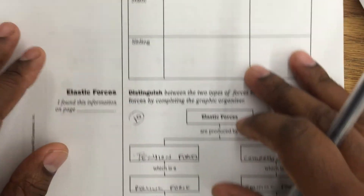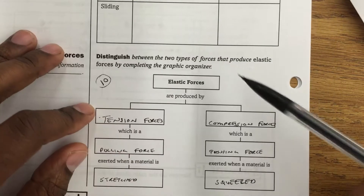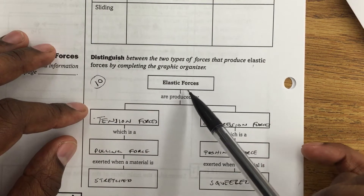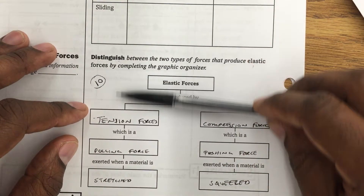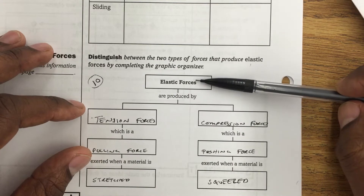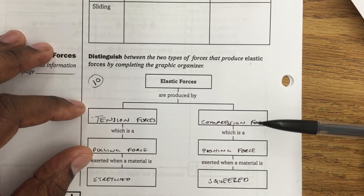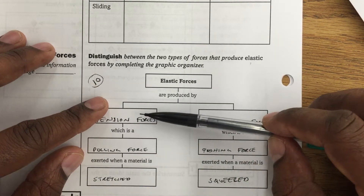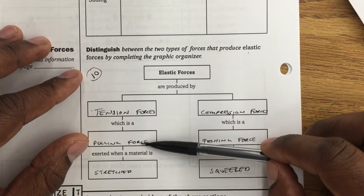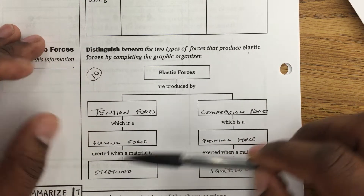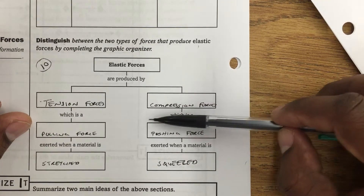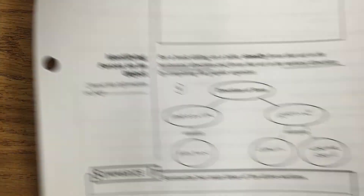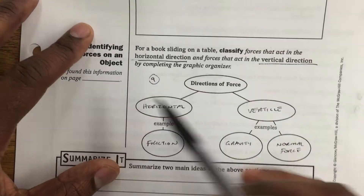This question says to distinguish — meaning tell the difference — between the two types of forces that produce elastic forces, by completing the graphic organizer. Elastic forces have two types: tension forces and compression forces. Remember a force is always a push or a pull. A tension force is a pulling force that is exerted when an object is stretched. However, a compression force is a pushing force that is exerted when an object is squeezed.